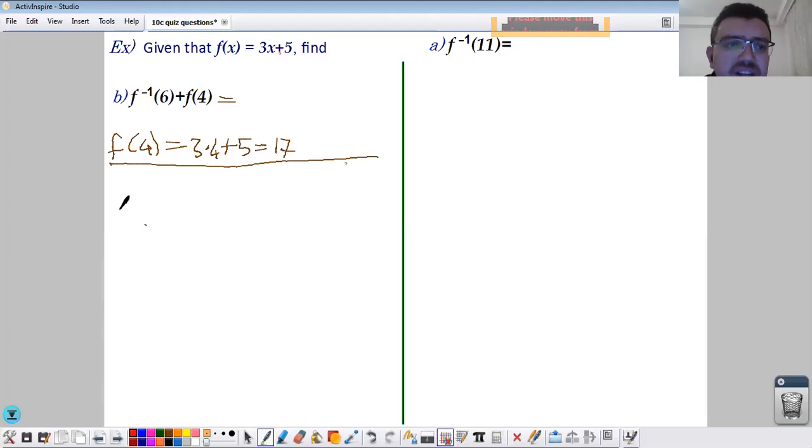Firstly, from this function, find inverse, which is whatever you have outside comes in and whatever you have inside goes out. And I want to find a result for f inverse of 6, so I don't need to make it...